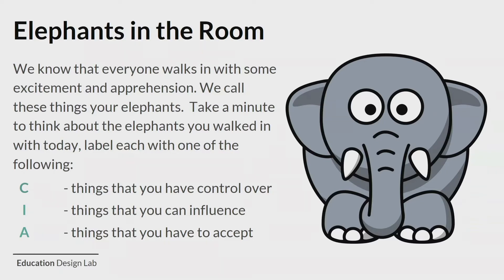Write one thing that you know you have control over. What is something that you can influence in this decision — something that's important to you? And finally, what is something that you just need to accept? Perhaps it's an elephant that you've been battling for a while — it's something that is a part of the process that we need to accept. This helps us ground ourselves in the work. Our intention was a personal elephant, but if it is something institutional, definitely put that down as well, so you can continue to explore that throughout the day.